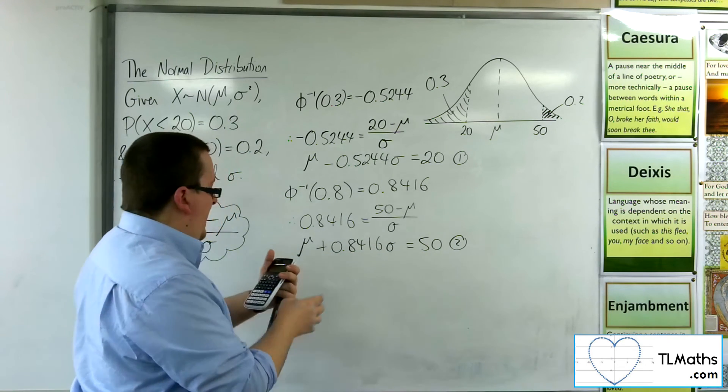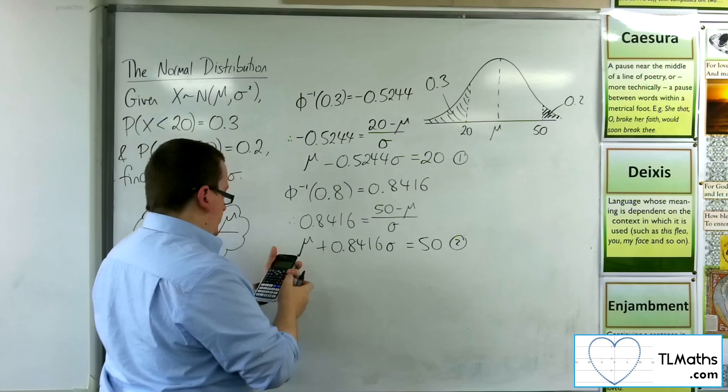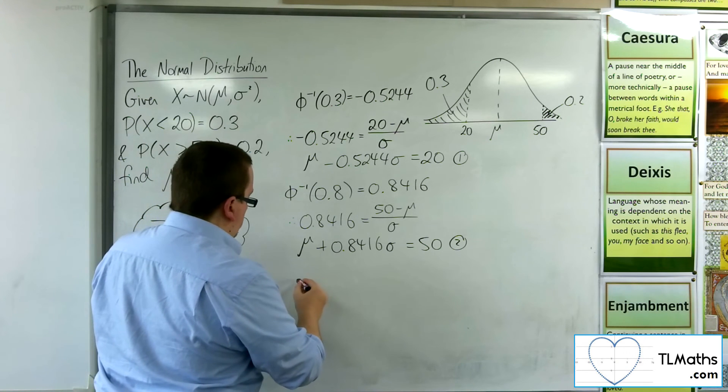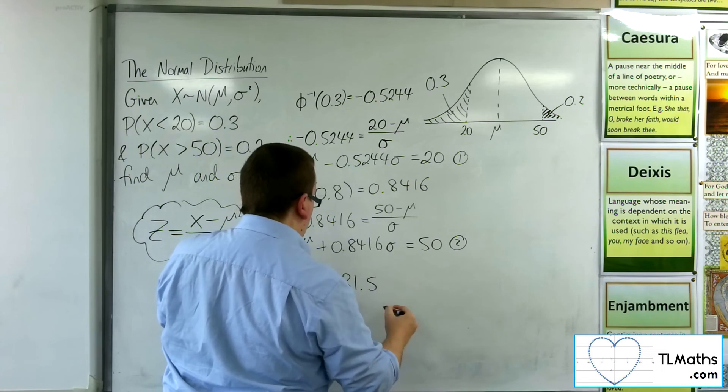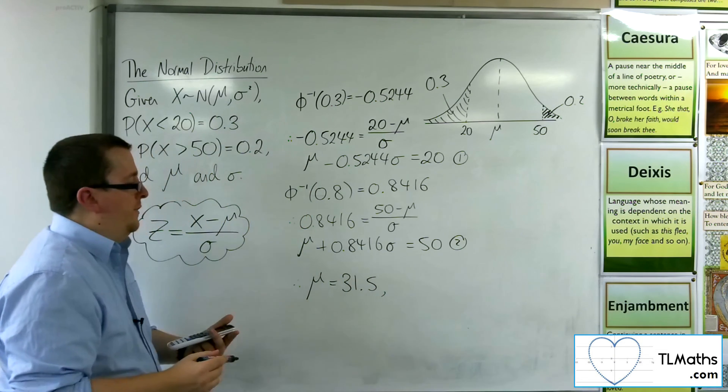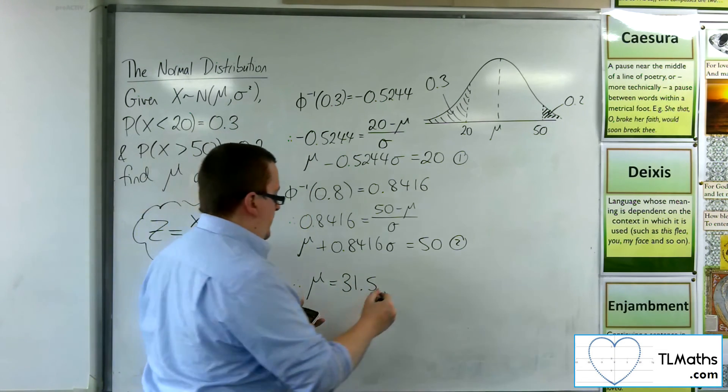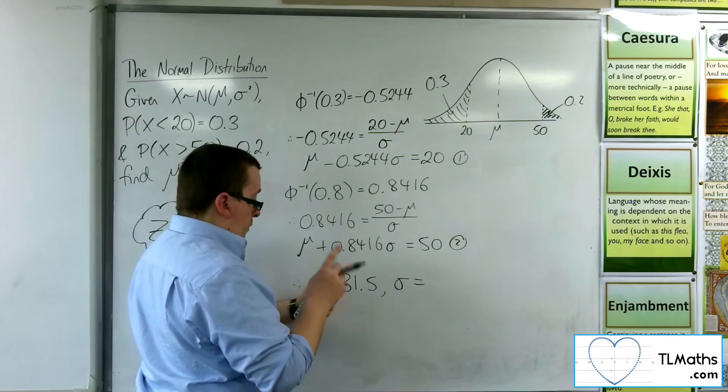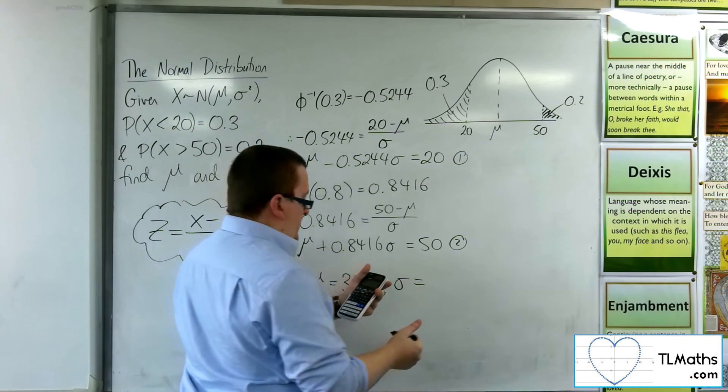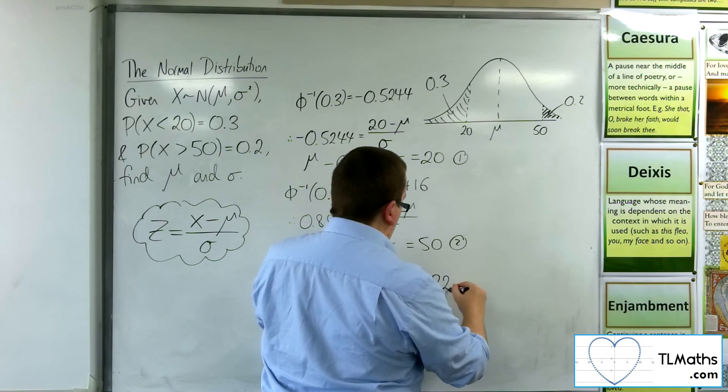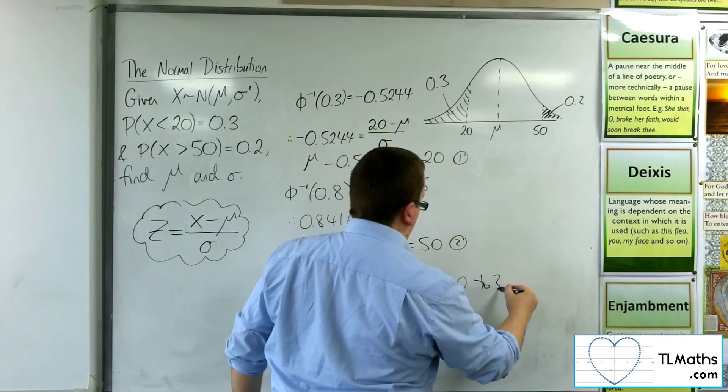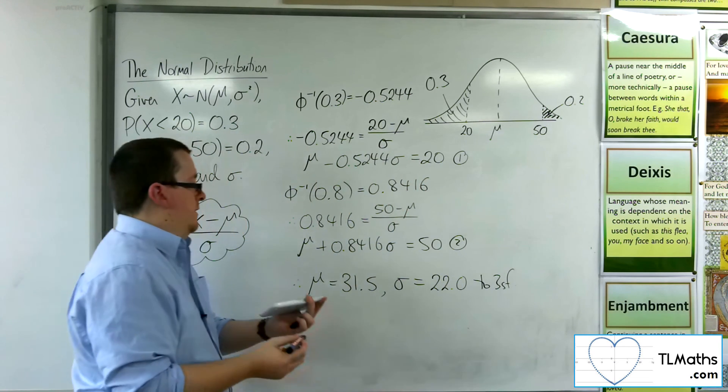So the x that I get, the μ, is 31.5 to 3 significant figures. And the σ, the y, is 21.96. So 22.0 to 3 sig fig.